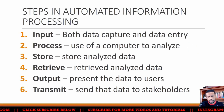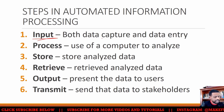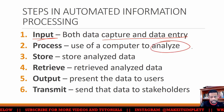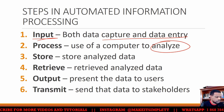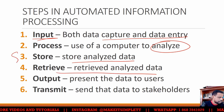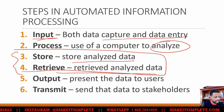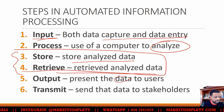In automated processing, you will input the information, which will be like data capture — OCR, OMR. Then they would use the computer to analyze it and do mathematical calculations. The data will then be stored and retrieved — storage and retrieval are kind of one and the same. Then they will have an output, which will be presenting the data or information, and they will send it to the stakeholders.